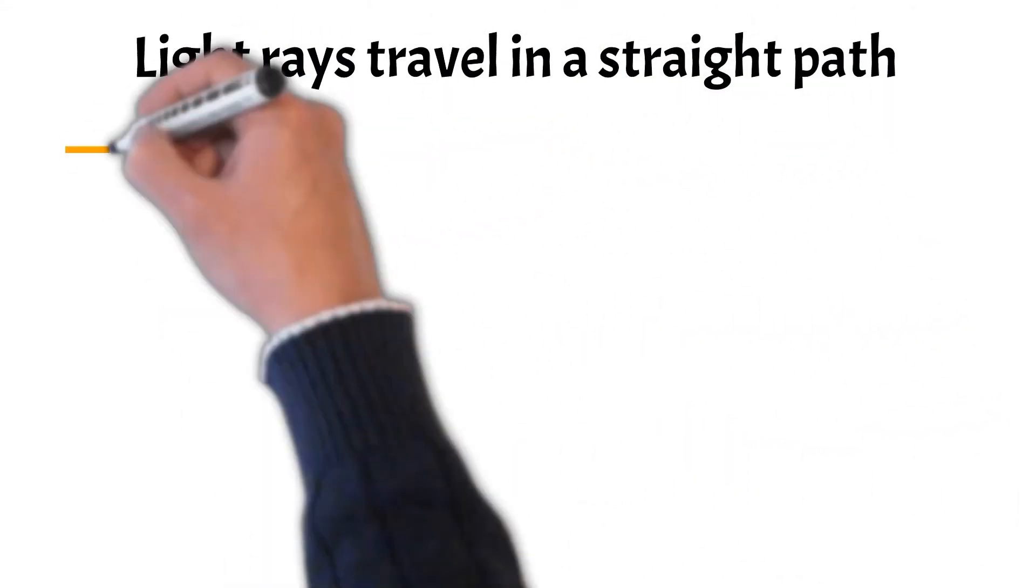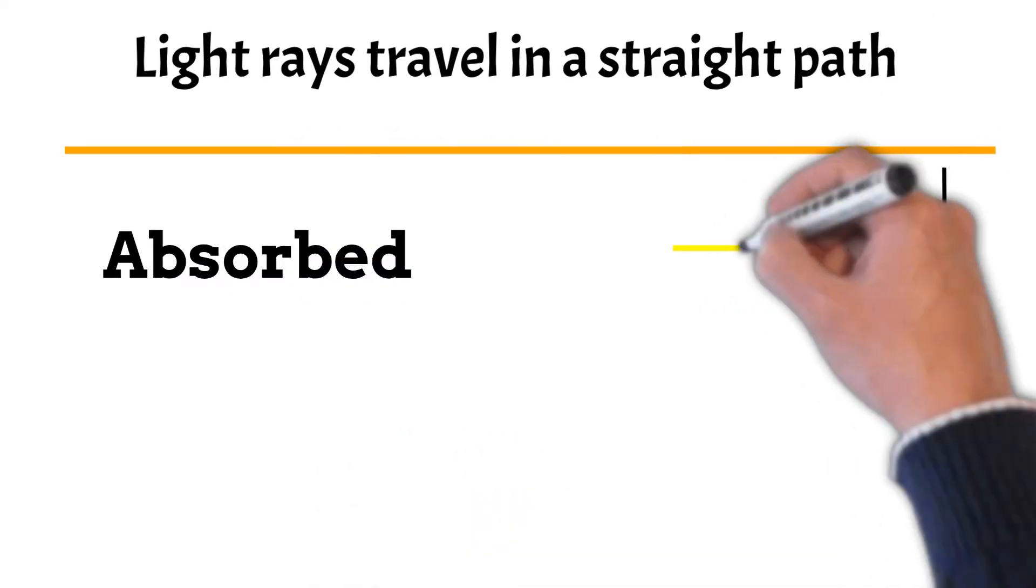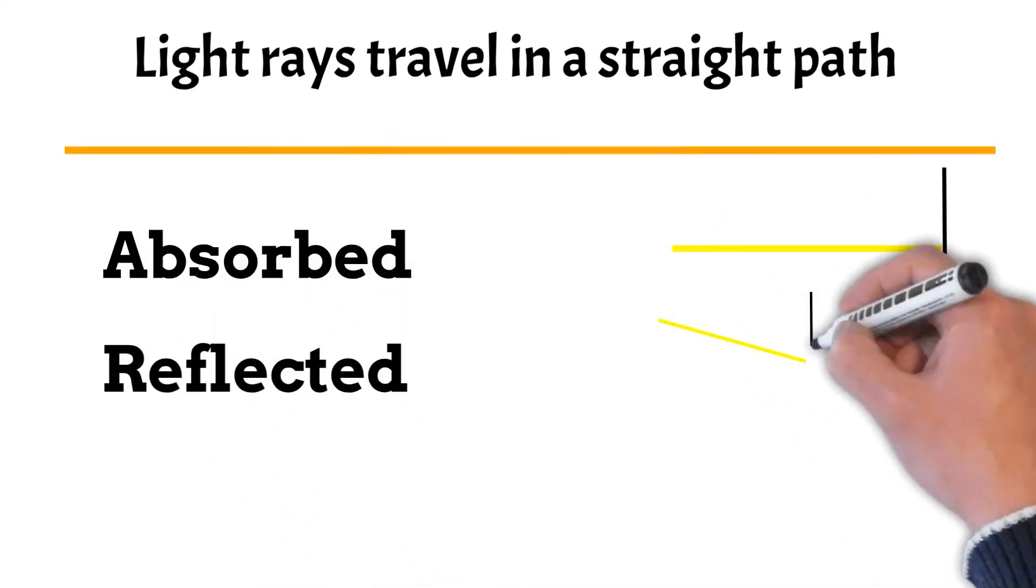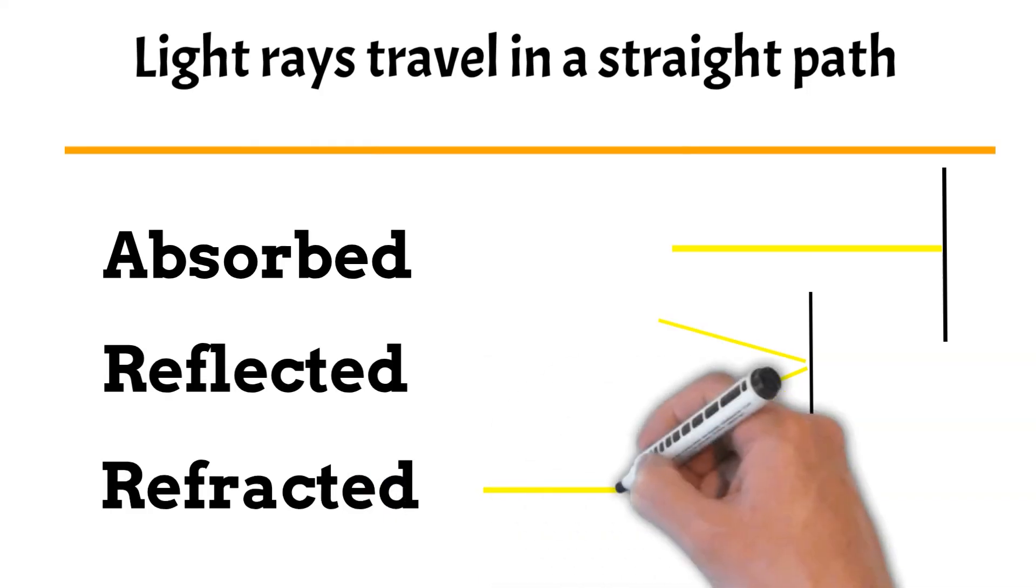Light rays travel on a straight path and can either be absorbed, reflected or refracted.